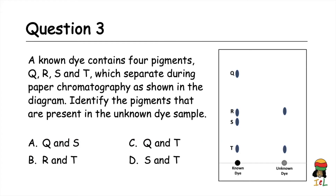Question three: we will use a diagram to the right of our screen to answer this question. A known dye contains four pigments: Q, R, S, and T, which separate during paper chromatography as shown in the diagram. Identify the pigments that are present in the unknown dye sample. Options — A: Q and S. B: R and T. C: Q and T. D: S and T. The answer is B, R and T. Notice that the unknown sample's solutes match up with R and T.